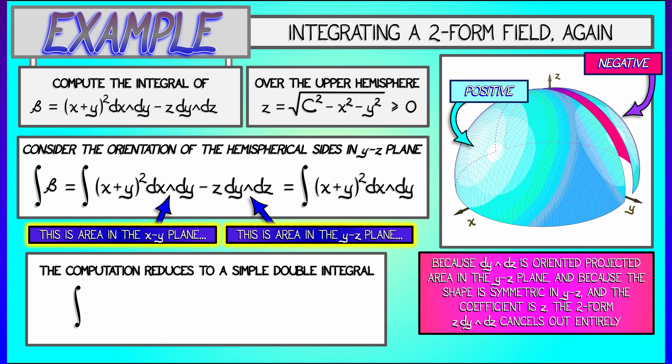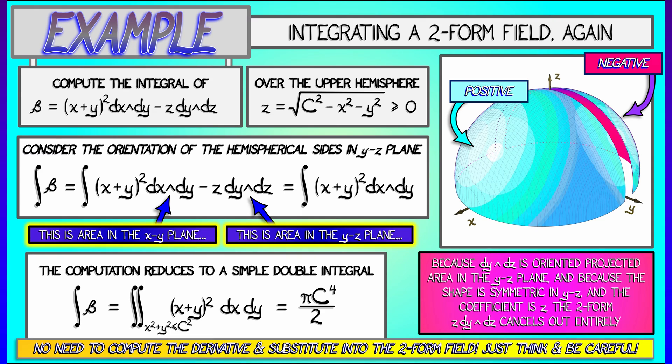That means we can project that hemisphere down to a disk in the xy plane. And the integral of beta just becomes an ordinary double integral in the xy plane that again can be done with a combination of a symmetry argument and polar coordinates in order to yield the answer pi c to the fourth over two.